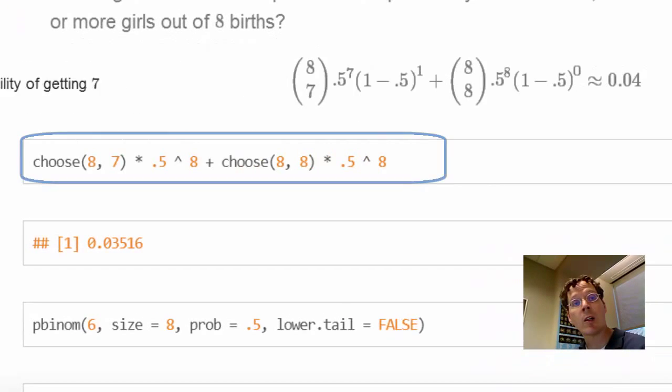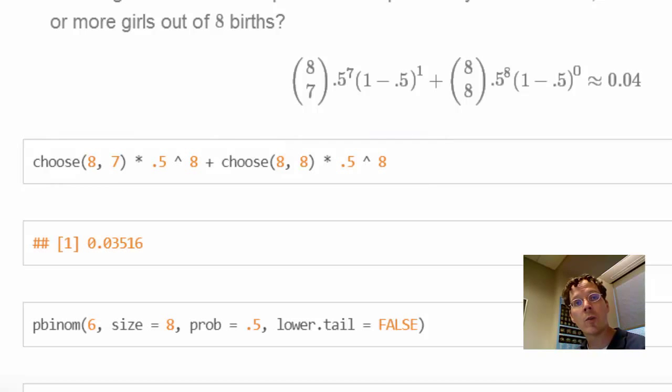Here I give you the R code for performing this calculation. Also, as with most of the common distributions, there's an R function and pbinom gives you these probabilities.